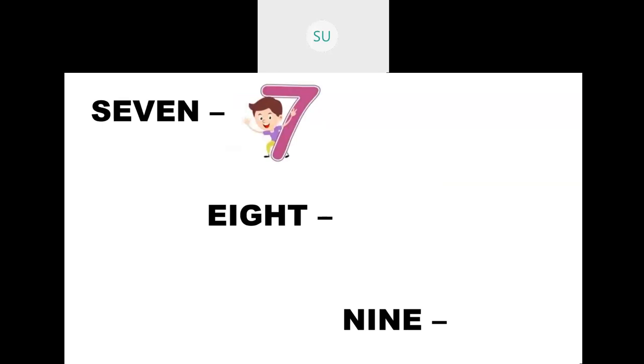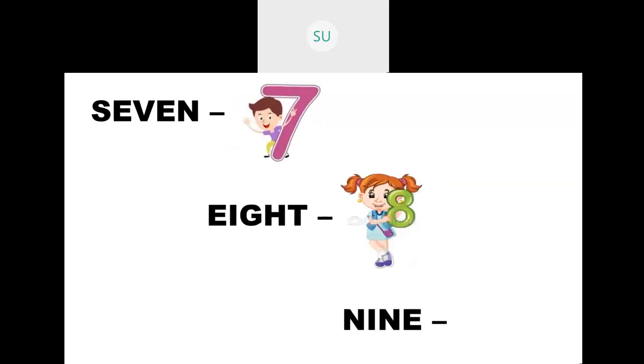Then we have 7: S-E-V-E-N. Then E-I-G-H-T is 8. And N-I-N-E is 9. So 7 is SEVEN, 8 is EIGHT, and 9 is NINE.